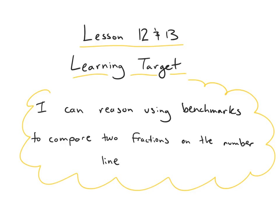This is a video lesson for module 5, lessons 12 and 13. The learning target for both of these lessons is: I can reason using benchmarks to compare two fractions on the number line. What we mean by using benchmarks is that we're going to use fractions that we have a pretty good confidence of where they fall on the number line — most commonly fractions like 1 half and 1 whole — to help us figure out where other fractions fall in relation to those.